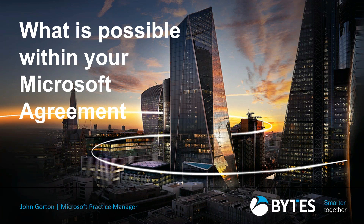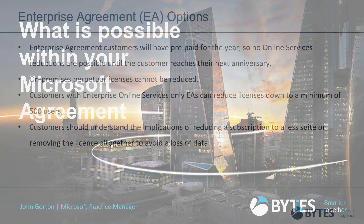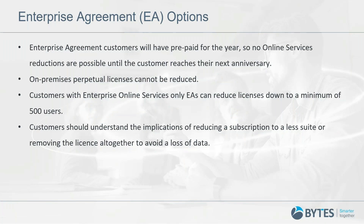Not all agreements have the flexibility to immediately reduce licences. The enterprise agreement, which many of our customers have, is a pretty rigid agreement type. Typically you will prepay for the year at the start. It isn't possible to reduce online services until you reach your next anniversary, so you'll have prepaid for a set number of licences. You can make licence reservations throughout the year for any online services to increase, but unfortunately you have to wait until the agreement anniversary to decrease those licences.